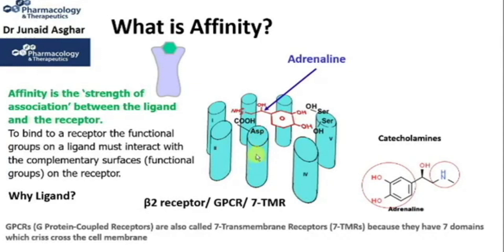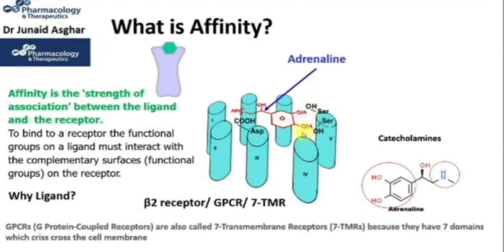This is the third domain. On the other hand, the two hydroxyl groups on the adrenaline and the two hydroxyl groups coming out of the serine residues on the fifth transmembrane domain of the receptor interact together, forming hydrogen bonding. And this solves the mystery as to how these agonists bind to these receptors and create affinity for themselves.